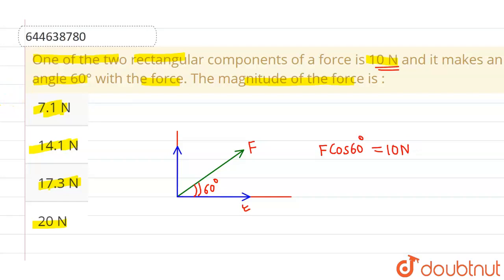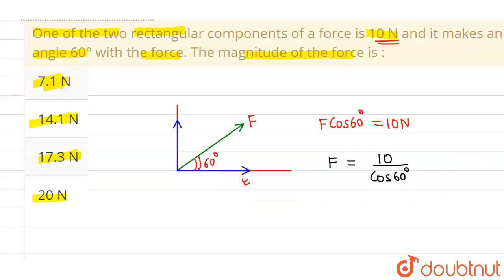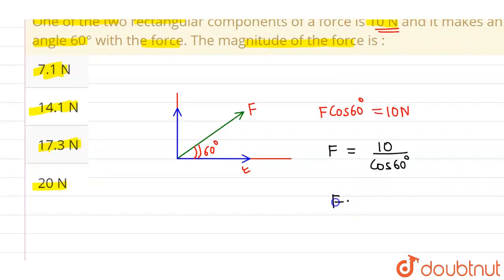So from here I will be getting force as 10 divided by cos of 60 degree. And the value of cos 60 degree is 1 by 2. So this force comes out to be 10 divided by 1 by 2 which comes out to be 20 newton.